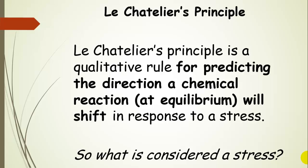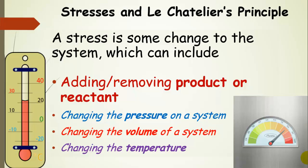When we do something to disrupt that equilibrium, that's a stress. What kinds of stresses are there? Basically it's some change to the system. We can add or remove product or reactant — changing the concentrations or partial pressures of any product or reactant is a stress. Changing the pressure on a system is a stress, and changing the volume is a stress. These two apply to gaseous systems where at least one reactant or product is a gas. The final stress is changing the temperature.